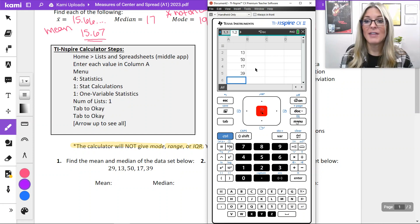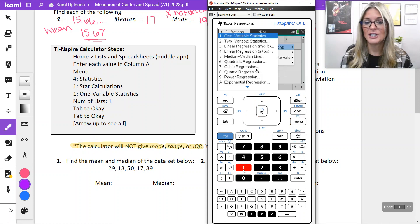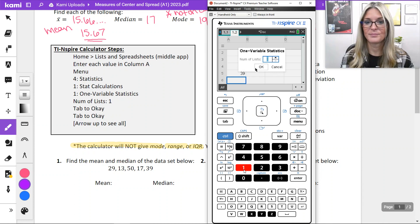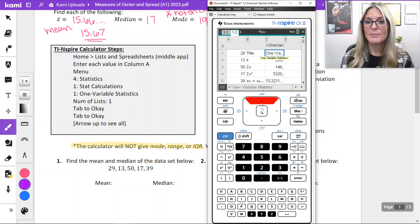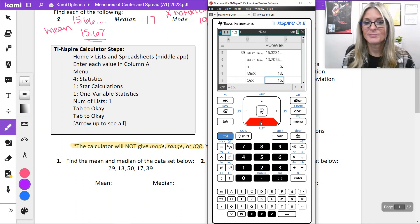Menu. Make sure you're out of that last box that we put the 39 in. Menu. Statistics. Stat calculations. One variable statistics. All of this stays the same. Hit your OK buttons using the tab key. Arrow up to see more. The list wasn't very long, so I was already near the top. Our mean is 29.6. Our median is going to be down here, is 29.